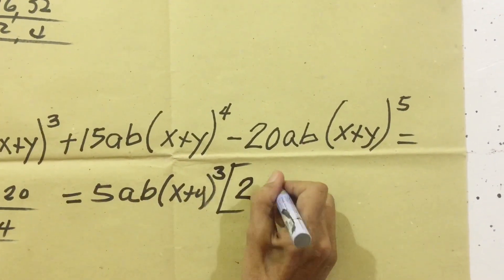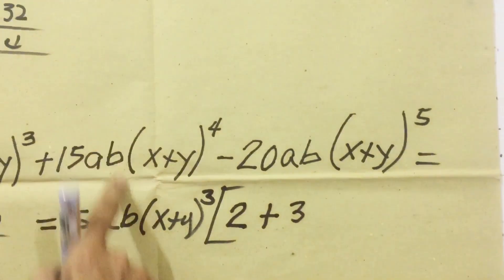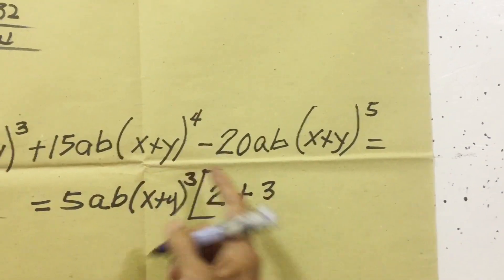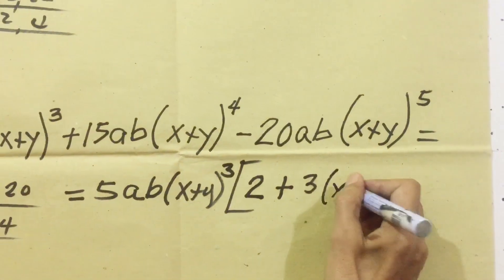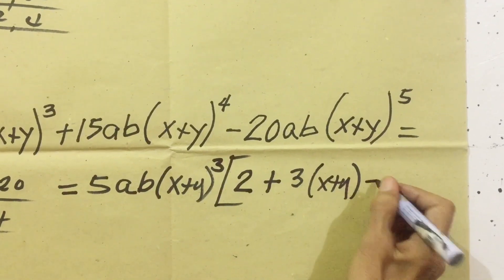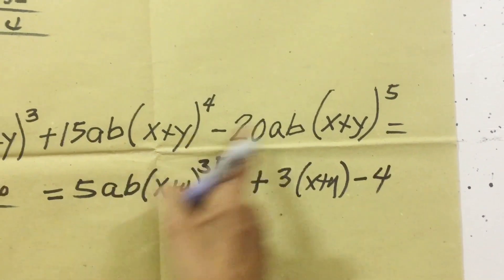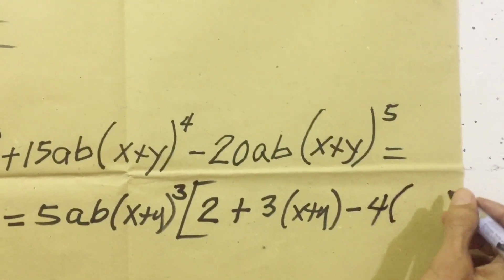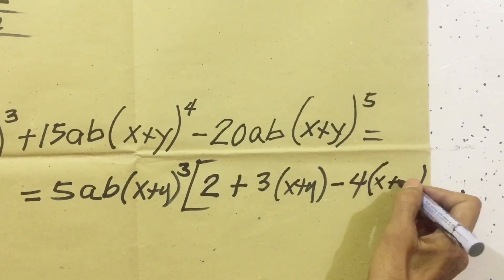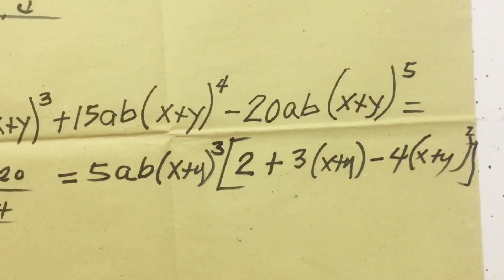Now we divide. 10 divided by 5 is 2; A and B cancel out, leaving just 2. Plus: 15 divided by 5 is 3, A cancels, and B exponent: 4 minus 3 equals 1, leaving B. Minus: 20 divided by 5 is 4, A cancels, B exponent: 5 minus 3 is 2, leaving B squared. That is our final answer for number 3.